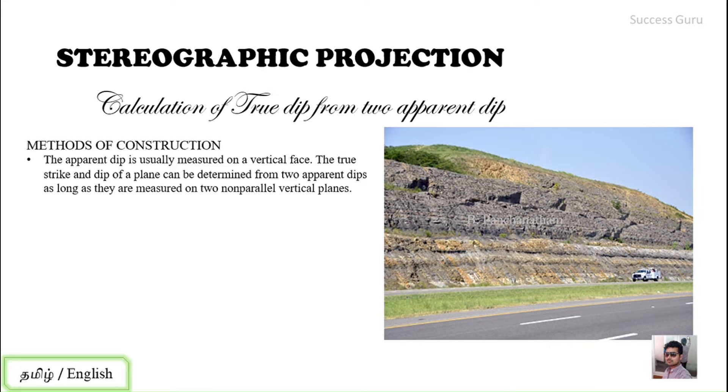If we have a cross section like a joint plane or a bedding plane that is exposed, you can simply use your Brunton to measure the strike and dip just by placing your Brunton over that. But when you are dealing with cross sections which are vertical planes, we may not have sufficient space.